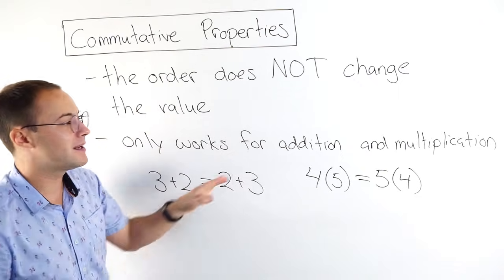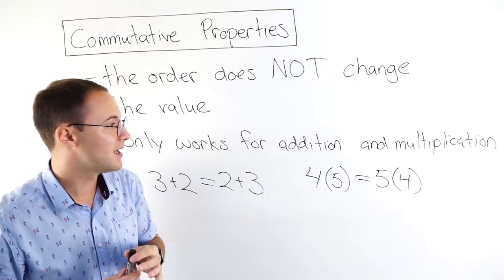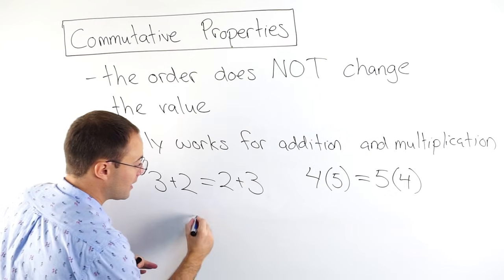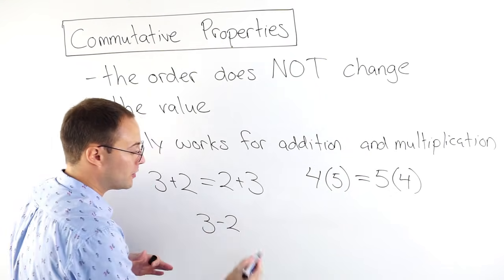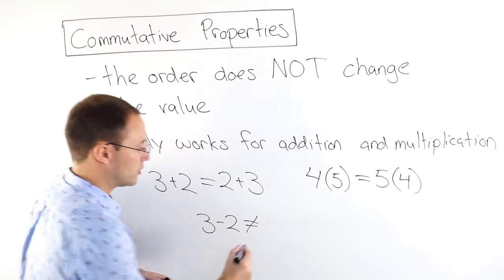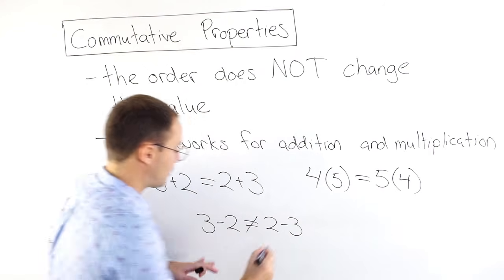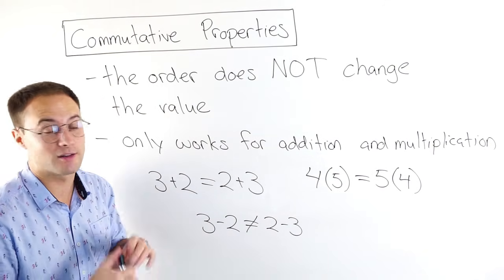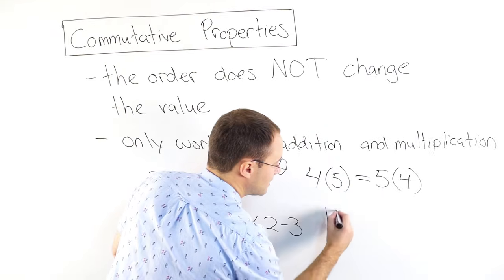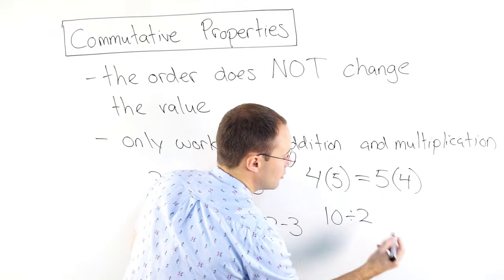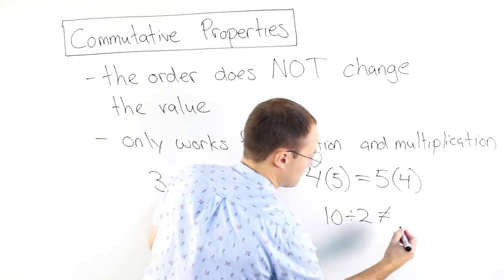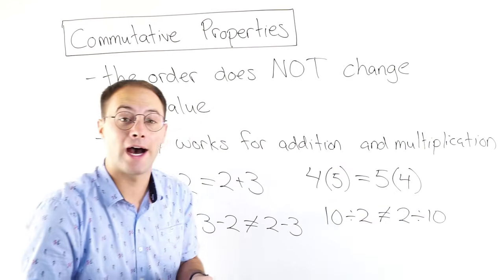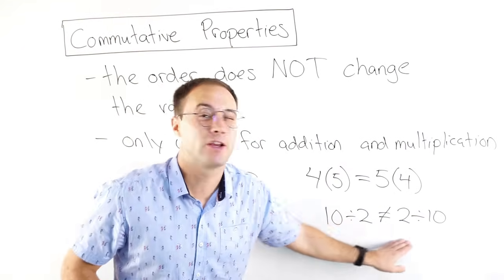For the commutative property, the order does not change the value — order does not matter — and it only works for addition and multiplication. If I try to do subtraction, 3 minus 2 is not equal to 2 minus 3. Three minus two is one; two minus three is negative one, so that doesn't work. Same thing with division: 10 divided by 2 is not the same as 2 divided by 10. They don't have the same value; they are not equivalent.